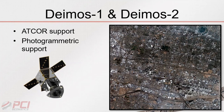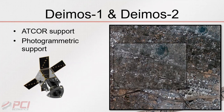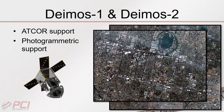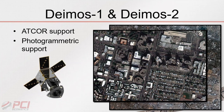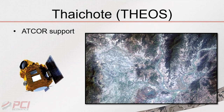The first two new sensors are Deimos 1 and Deimos 2 — two high-resolution mini satellites for earth observation by Elecnor Deimos. For both sensors we're providing ATCOR and photogrammetric support, allowing users to ingest Deimos imagery and use our advanced atmospheric correction and photogrammetric capabilities. For example, using ATCOR you can significantly reduce or remove haze from imagery. Deimos also supports pan-sharpening since it provides both multispectral and panchromatic imagery.